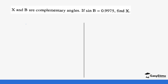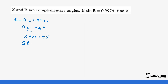Given that angle x and b are complementary and sine b equals 0.9975, we check the table and get 85.93 degrees. Since b plus x equals 90, x equals 90 minus 85.93, which gives us 4.07 degrees.